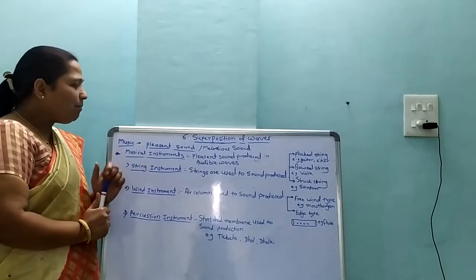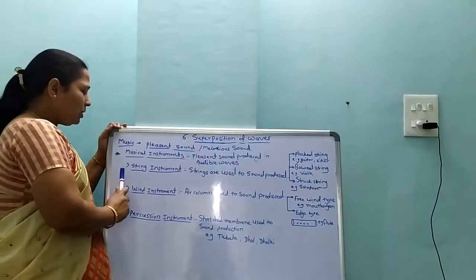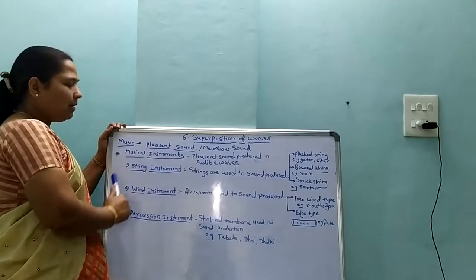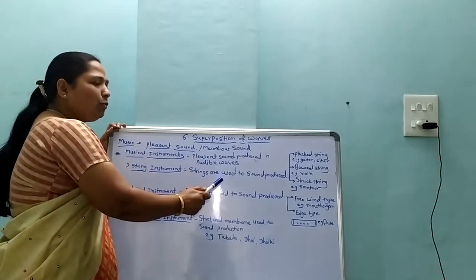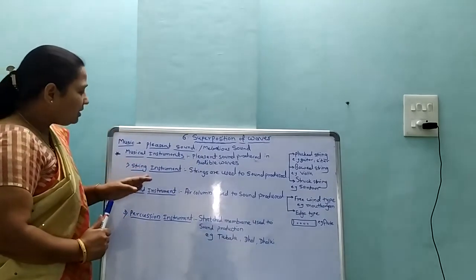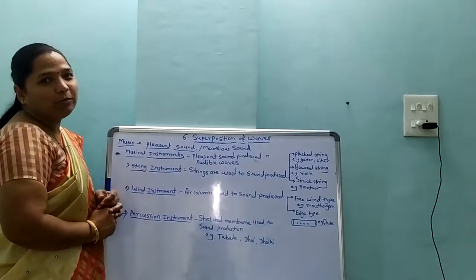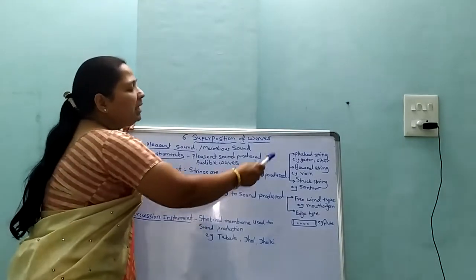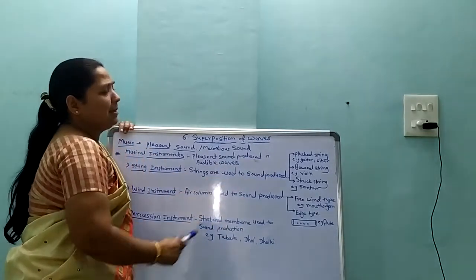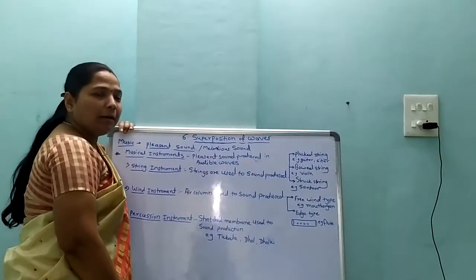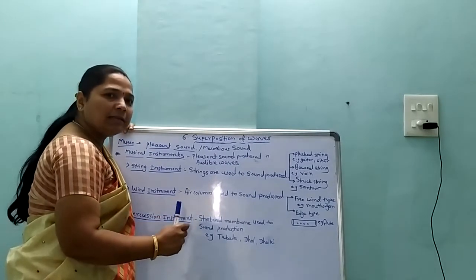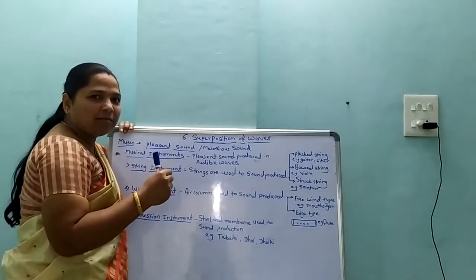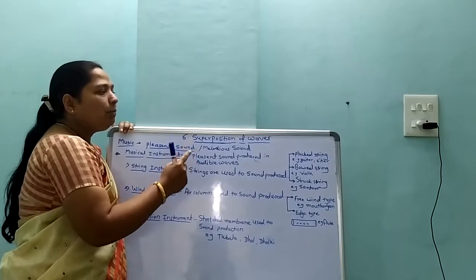An example of vibrating string instruments are string instruments, where strings are used to produce sound. String instruments are mostly of three types. The first type is pluck string instruments — for example, guitar and sitar. In these instruments, the strings are plucked to produce sound.